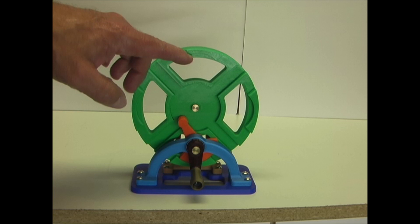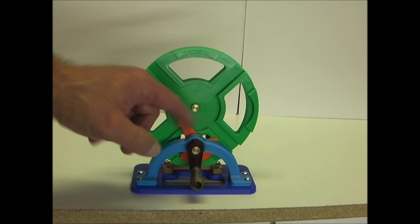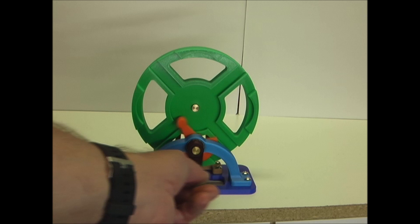This variation is an internal Geneva Drive, where the indexing components are within the driven wheel. The pin is located on the end of an arm and engages the slots in the wheel to rotate it.